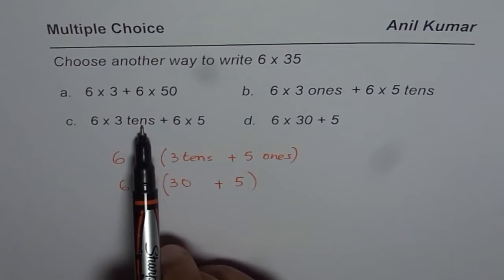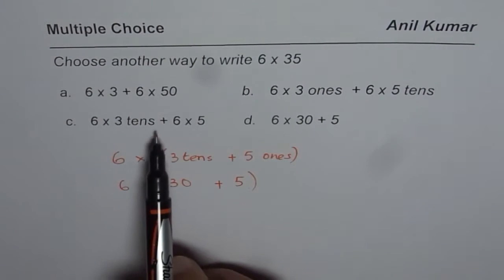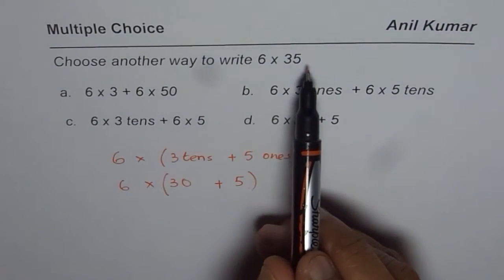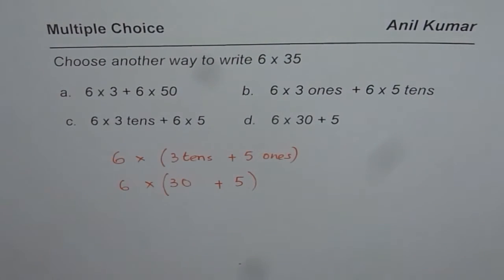Option C: 6 × 3 tens + 6 × 5. That is correct—30 plus 6 × 5, where 5 is the number of ones. That is absolutely correct.